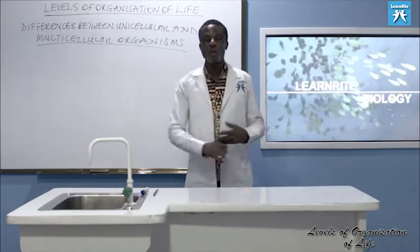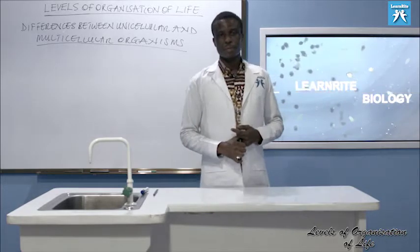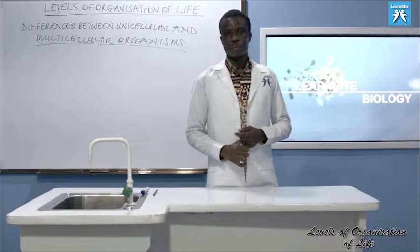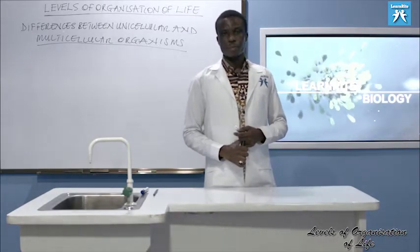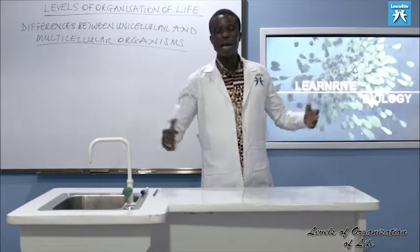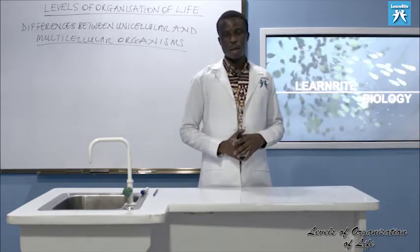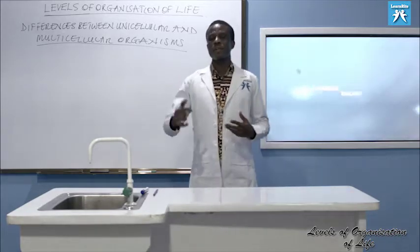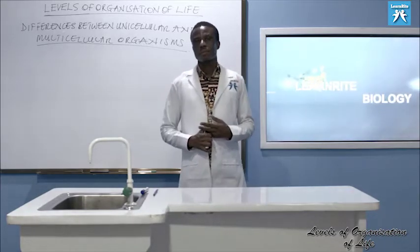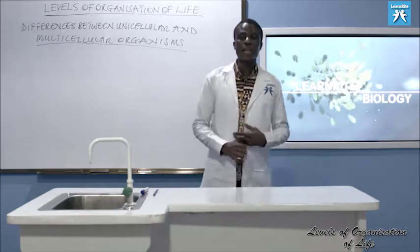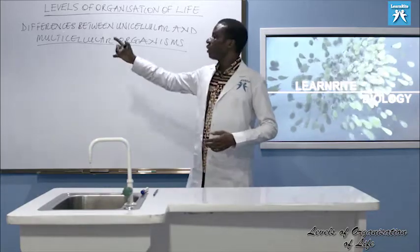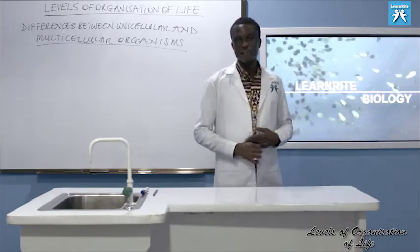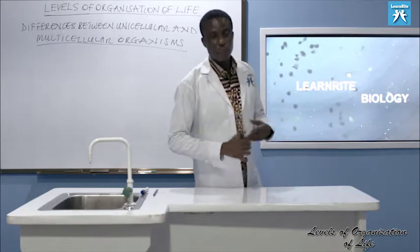A multicellular organism is made up of more than one cell. All animals are multicellular. We have been looking at the advantages and disadvantages of life at each level, and now let's look at the differences — it's just a summary of what we covered in the previous lesson.